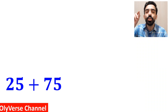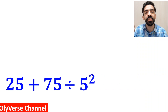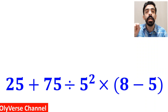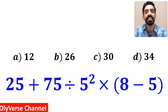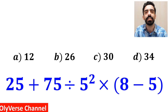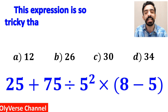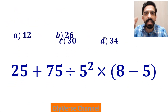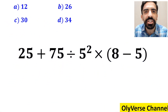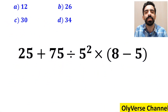What is the value of the expression 25 plus 75 divided by 5 to the power of 2, multiplied by open parenthesis 8 minus 5 close parenthesis? Which option do you think is the correct answer to this question? This expression is so tricky that a lot of people get the wrong answer. Let's go through this question step by step and solve it together.